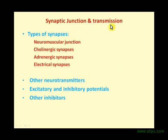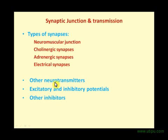Synaptic junction and transmission. We have four types of synapses: the neuromuscular junction, cholinergic synapses, adrenergic synapses, and electrical synapses. We will also discuss other neurotransmitters apart from these junctions, then the excitatory and inhibitory potentials, and other inhibitors.